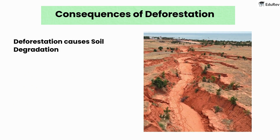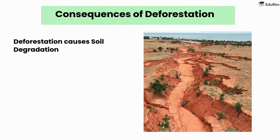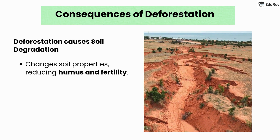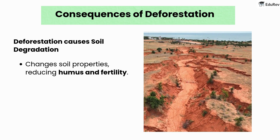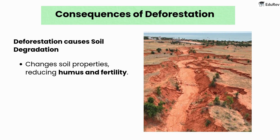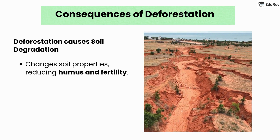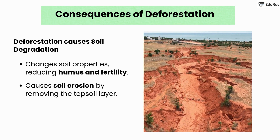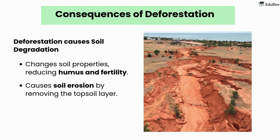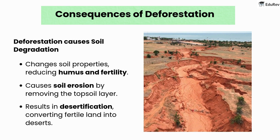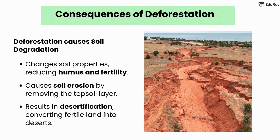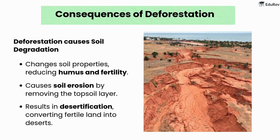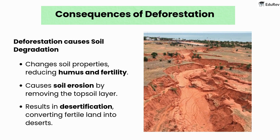Deforestation causes soil degradation by changing soil properties, reducing humus and fertility. It causes soil erosion by removing the top soil layer, and results in desertification — converting fertile land into deserts.